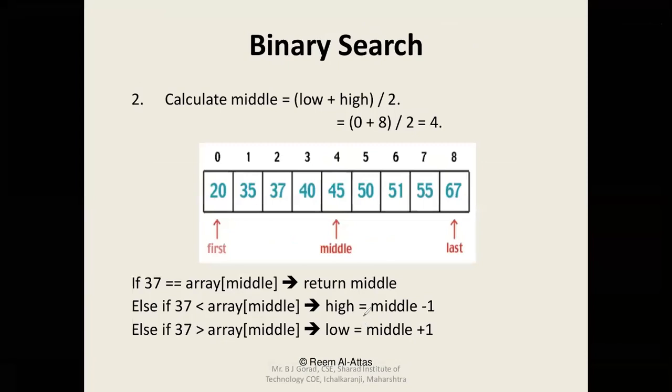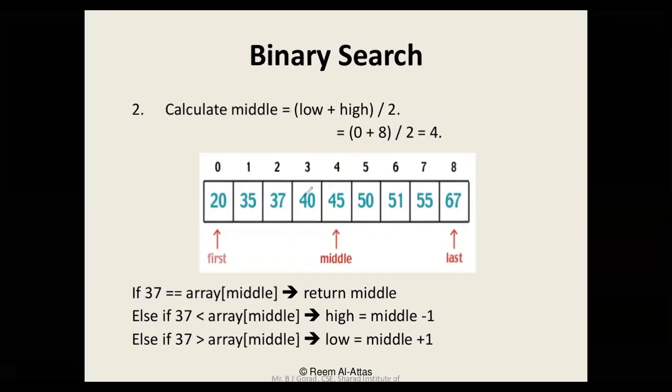Initially when trying to find 37, the array middle is 45. Why is array middle 45? Because low which is 0 and high which is 8 is averaged to 4, and at index 4 is 45. This is the first case.